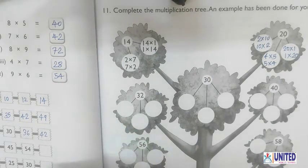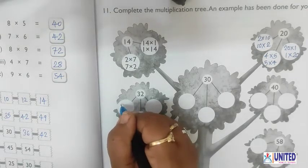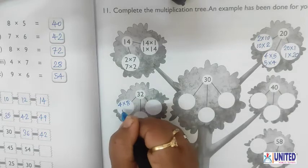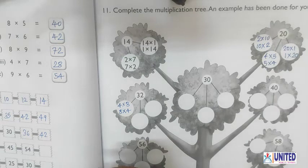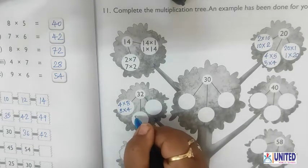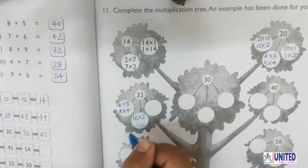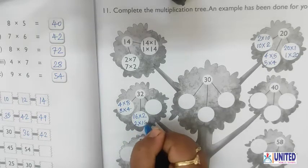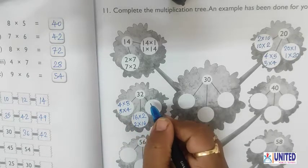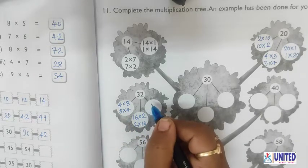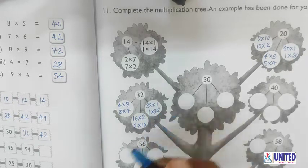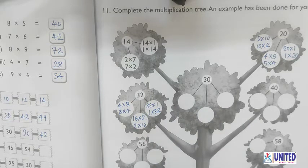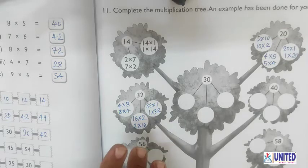For the number 32: 4×8=32, 8×4=32. Also, 16×2=32 and 2×16=32. And every number appears in the 1 times table, so we can write 32×1=32 or 1×32=32. So the factors of 32 include 1 and 32.